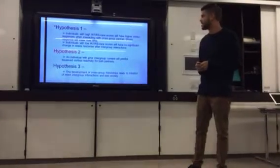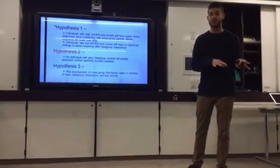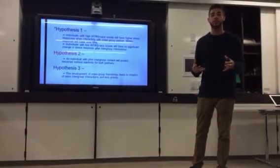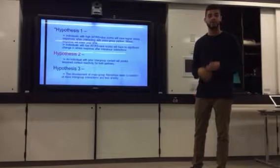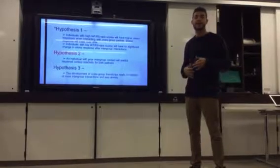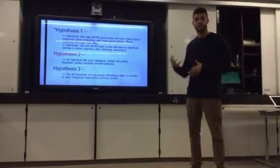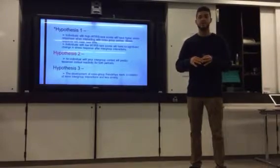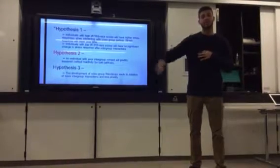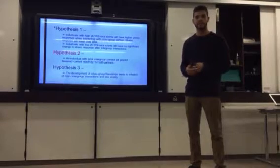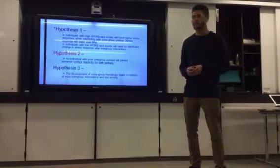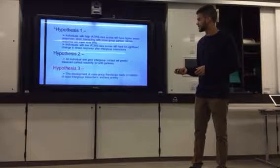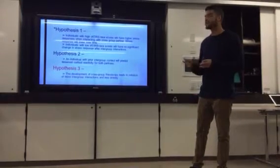The second hypothesis stated that if you do have prior intergroup experience, so if you are someone who in this case a college student who was involved in a lot of cultural groups and tried to stimulate a lot of these groups, you would have less of a cortisol reactivity not just for you but for your partner as well because you would have had that past experience and that predictability in that case.